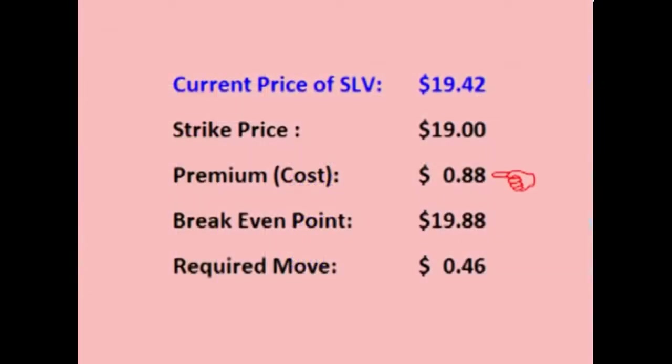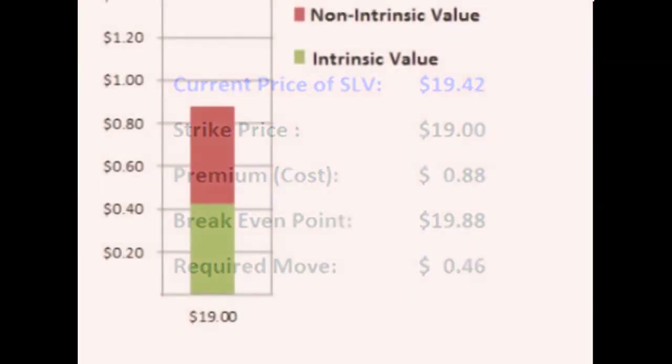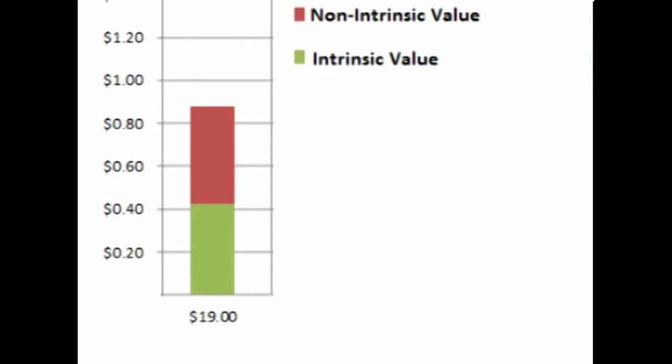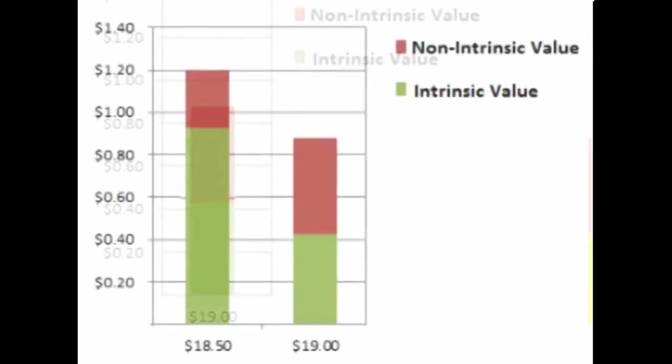The $19.00 strike costs $0.88 up front, locking in a preset buy price of $19.00 per share, so the breakeven point is $19.88. The $19.00 strike also locks in a buy price below the current price of SLV, so this option is also in the money, but not as deep in the money as the $18.50 strike. The $18.50 strike has more intrinsic value than the $19.00 strike.